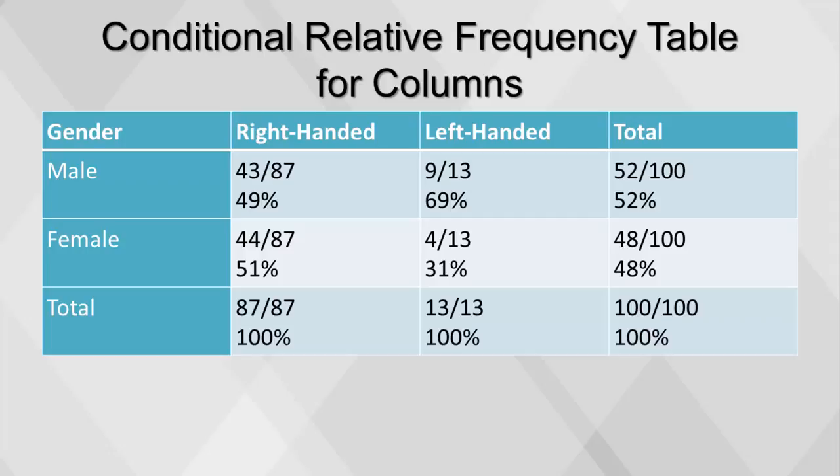Now the results can be interpreted into sentences by focusing on the columns in the contingency table. 49% of right-handed people are males. 31% of left-handed people are females.